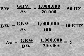If we desire a bandwidth of 200 kHz, the gain would be calculated by dividing the GBW, 1,000,000, by the bandwidth, 200 kHz, or 5.